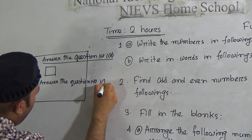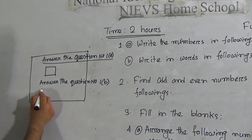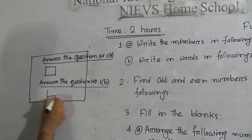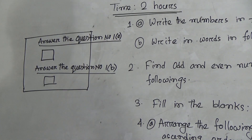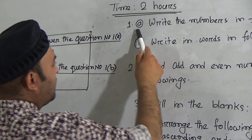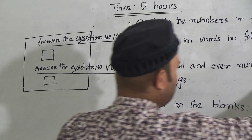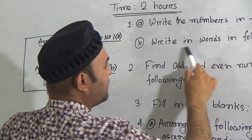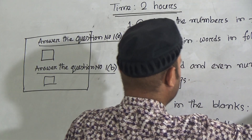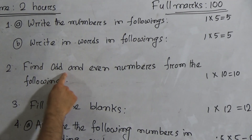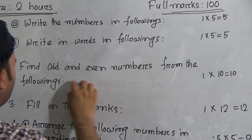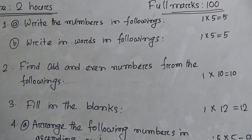For question one B, you will write the answer here. Similarly, you can write one, two, three, four — all the numbers here. Question one A contains five marks and question one B also contains five marks.